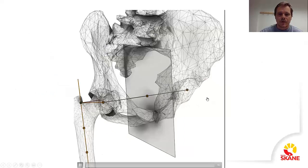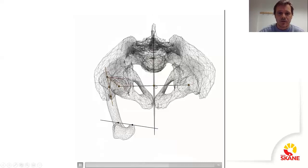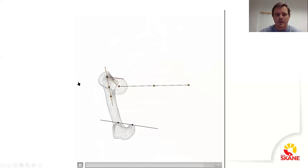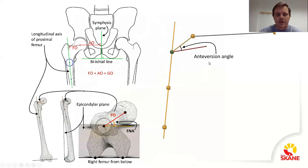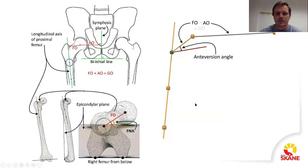Continuing with the pelvis: in this model we have the anteversion angle, the femoral offset, and the acetabular offset, which is from the midline to the rotational center. Comparing this 3D picture with the original 2D picture, you can see the anteversion angle, and this is the line on top of the plane described earlier. The femoral offset is this one. In 2D you only see the frontal image, which always shows a shorter line than it really is. The acetabular offset is here to there, and the combined femoral offset and acetabular offset is the global offset.